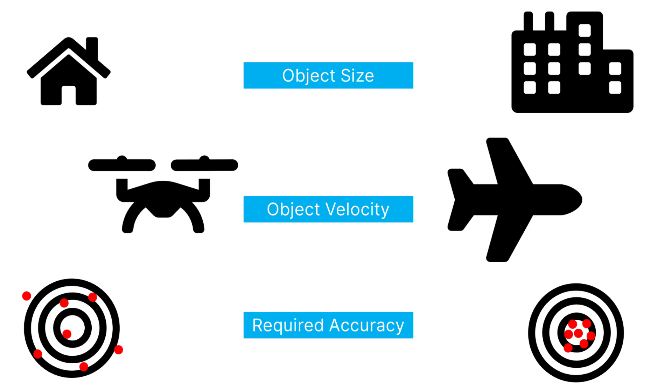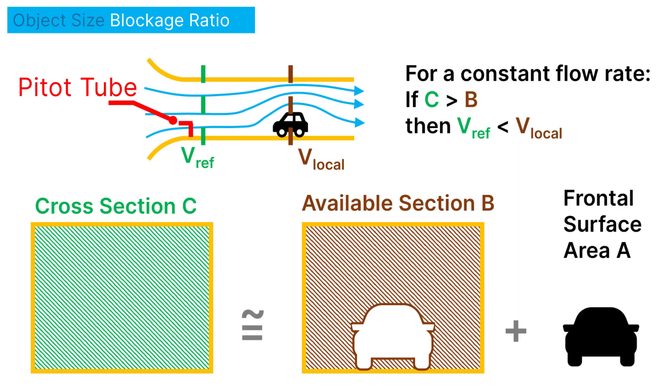Now the reason for these variations are the changes in object size, object velocity, and required accuracy. Let's start with object size. When you place an object in the test section of a wind tunnel, the air needs to curve around it and fit between the object and the walls of the wind tunnel. Now this creates two problems. First, the blockage ratio.